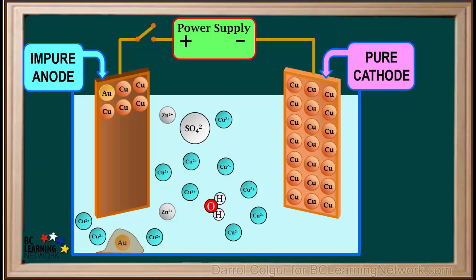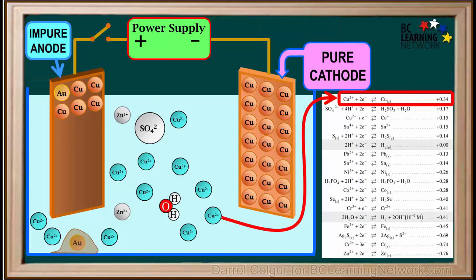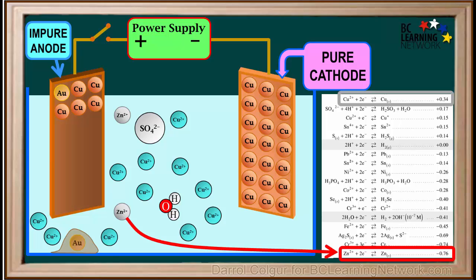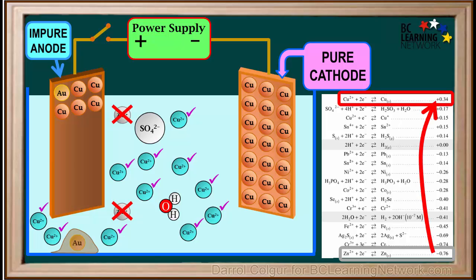Now we will reveal the cathode again. Remember, reduction of cations occurs at the cathode. The reduction potential of Cu 2 plus ions is positive 0.34 volts. It is considerably higher than that of zinc 2 plus at negative 0.76 volts. So Cu 2 plus ions will be reduced at the cathode. But Zn 2 plus ions will not be reduced as long as Cu 2 plus ions are present, because Cu 2 plus has a higher reduction potential than zinc 2 plus. So we will remove the zinc ions from our diagram.